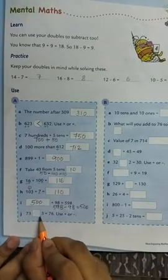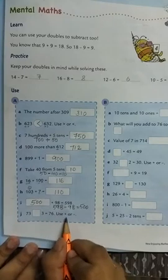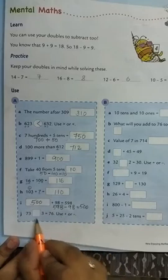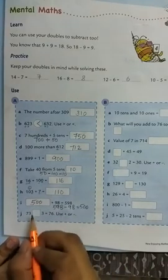73 dash 3 is equal to 76. Here we have to check whether what sign will come. Here plus will come. Here minus will come. Let's check.